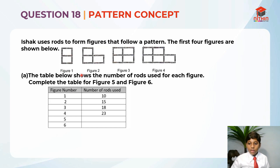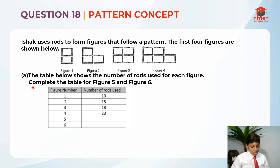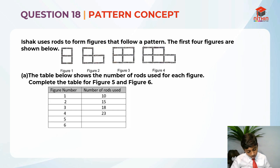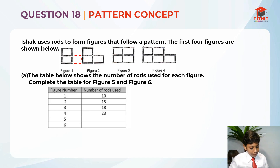So figure 1 is this. Figure 2 — they have added this thing over here. Figure 3, they added 3 more. Figure 4, they added 5 more. So for figure 2, they have added 5 more rods: 1, 2, 3, 4, 5. So they have added 5 rods.